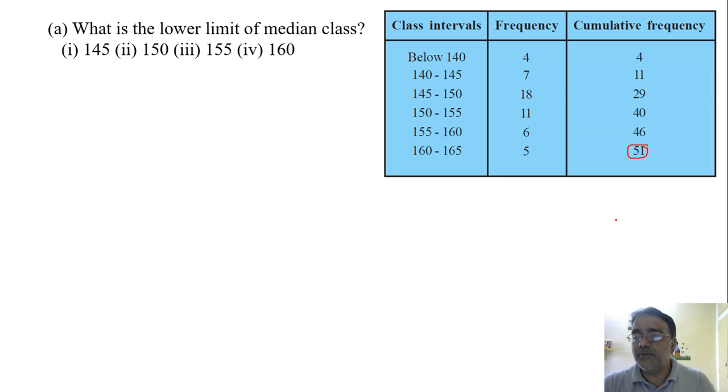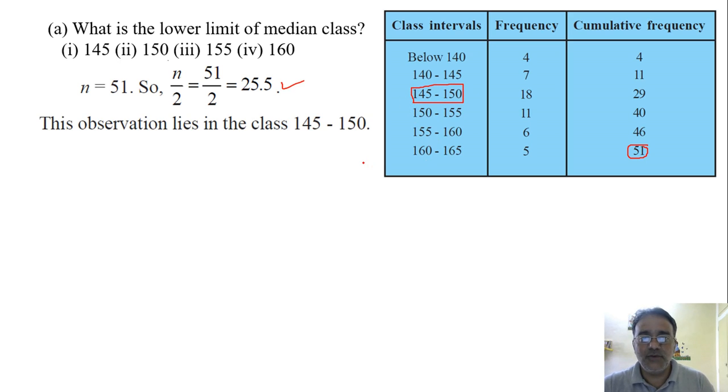So 25.5 belongs to the class 145 to 150. So the lower limit of the median class is 145. The first option is the correct answer.